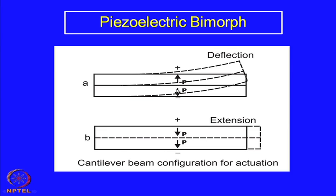In the other configuration, the two strips are placed together with their polarization axes in opposite directions — one pointing downwards and one pointing upwards. In such a situation, one will try to expand and the other will try to contract. The lower one tries to extend along its length while the top one tries to contract. As a result, the whole strip will bend.